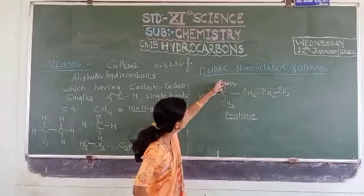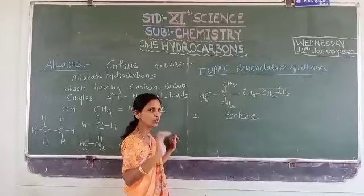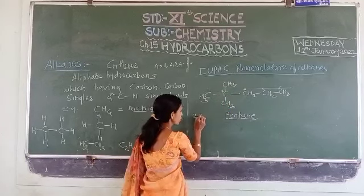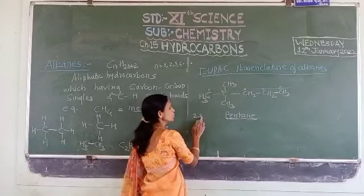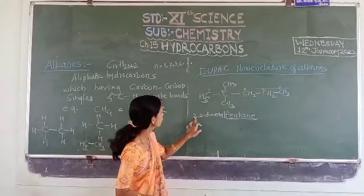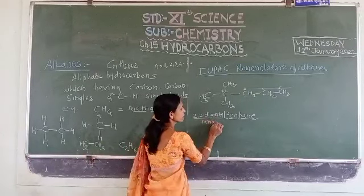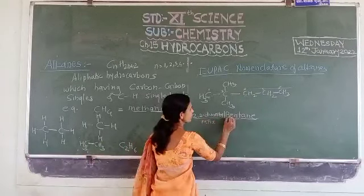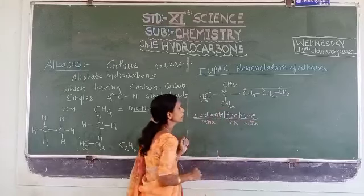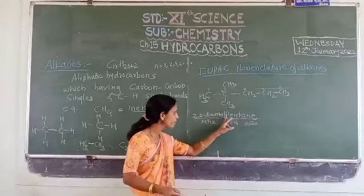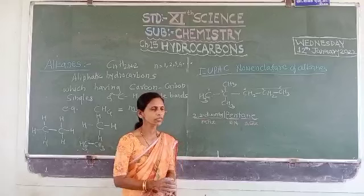We have to write this in the prefix using the IUPAC rule. Both methyl groups are attached to the second carbon atom. Therefore we write: 2,2-dimethyl — because there are two methyl groups at the same carbon atom. The prefix is 2,2-dimethyl, pent- is the root name, and -ane is the suffix. Hence the name of this compound is 2,2-dimethylpentane. Note that the prefix and root name should be fused with no space between them.